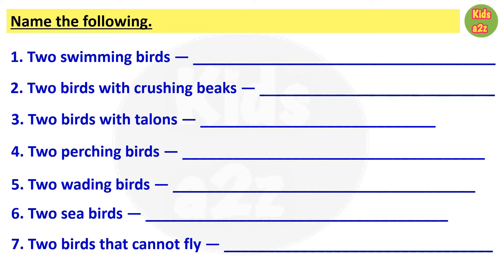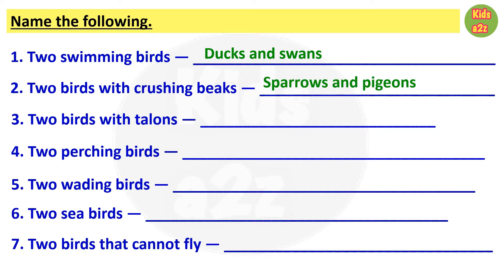In this worksheet, kids need to write 2 examples for each bird. First one is 2 swimming birds — they can write ducks and swans. Number 2, 2 birds with crushing beaks. Crushing beaks means short and hard beaks to crush grains and seeds. Examples are sparrows and pigeons.